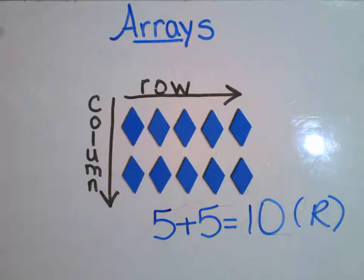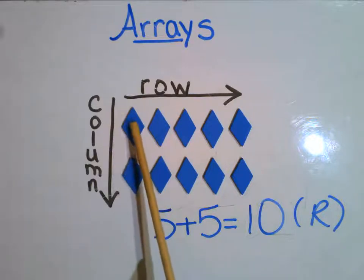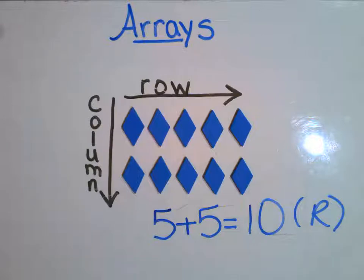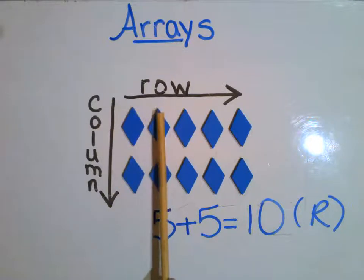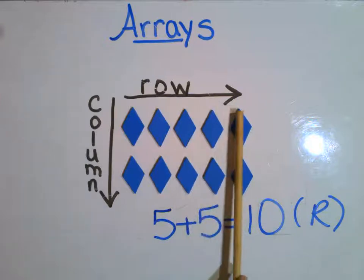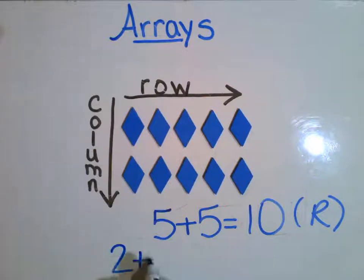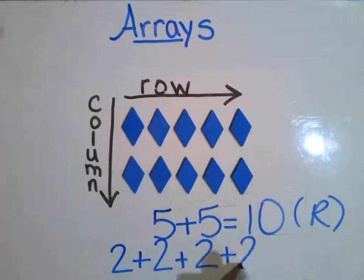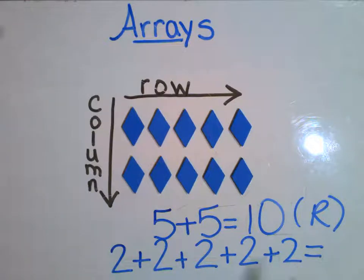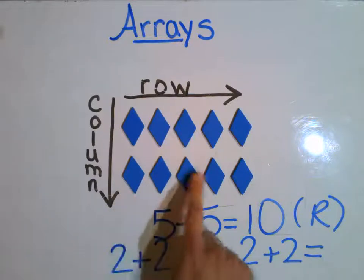Now let's go ahead and figure out for the columns. Remember we are not going to be adding five plus five because when you have your columns, there's only two in each column. We're not going to be adding the number two twice because we have more than two columns. Let's count our columns: one, two, three, four, five. So that means I'm going to be adding the number two five times. Two plus two plus two plus two plus two equals. We have five twos because that matches my five columns.